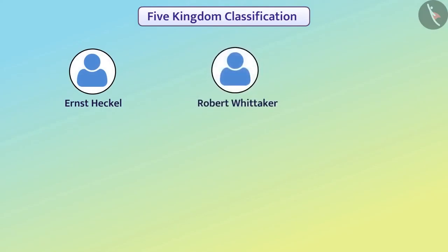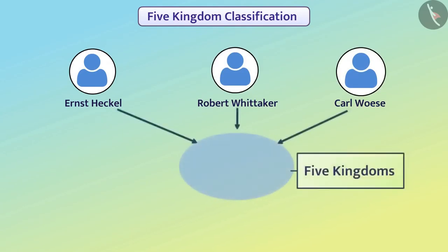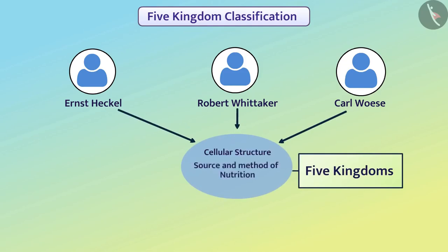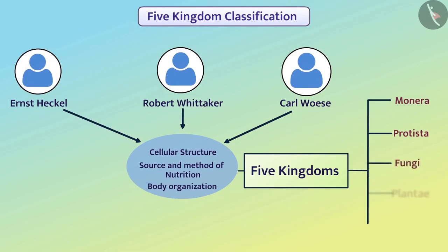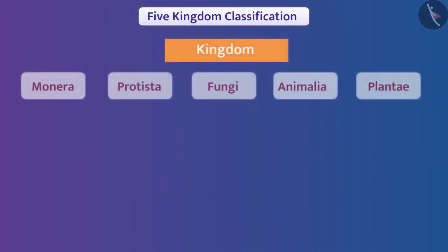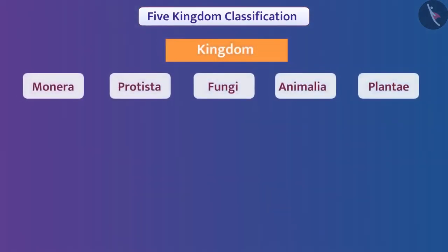Scientists named Ernest Haeckel, Robert Whittaker, and Carl Woese divided all living organisms into five kingdoms based on cellular structure, sources and methods of nutrition, and body organization. The names of these kingdoms are Monera, Protista, Fungi, Plantae, and Animalia. It has been observed that in any kingdom there are also organisms which differ from each other in terms of specific characteristics.